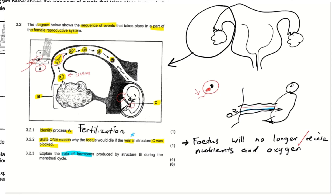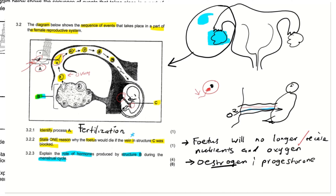The next question says: explain the role of hormones produced by structure B during the menstrual cycle. Structure B here is showing the ovaries — we have just zoomed into that portion. They want us to explain the role of hormones produced by the ovaries. The ovaries produce the hormone estrogen as well as progesterone — estrogen comes from the Graafian follicle in the ovary, and progesterone comes from the corpus luteum also in the ovary.